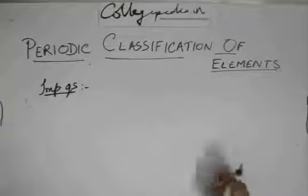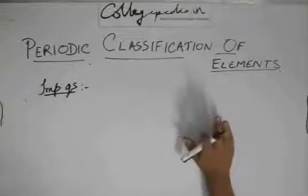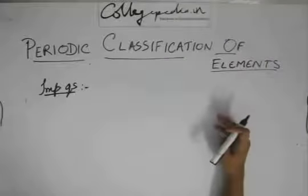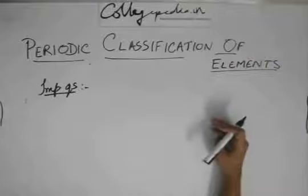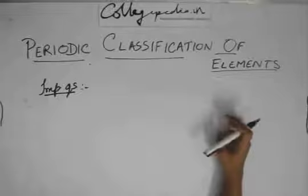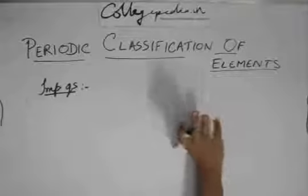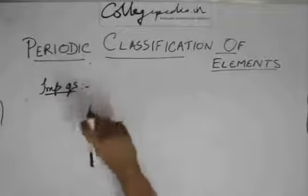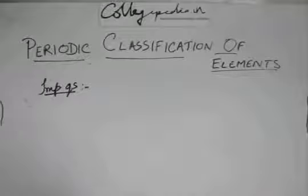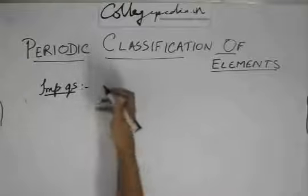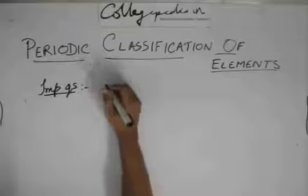Of course, you have all the theoretical questions - explain the achievements and explain the limitations, explain the achievements of Dobereiner's triads limitations, achievements of Newland's octaves limitations, achievements of Mendeleev's periodic table limitations and so on. So these are all theoretical questions. You need to just write the points in the point form. But some very interesting questions are like...